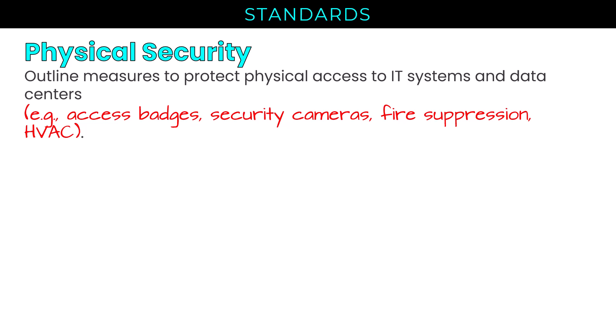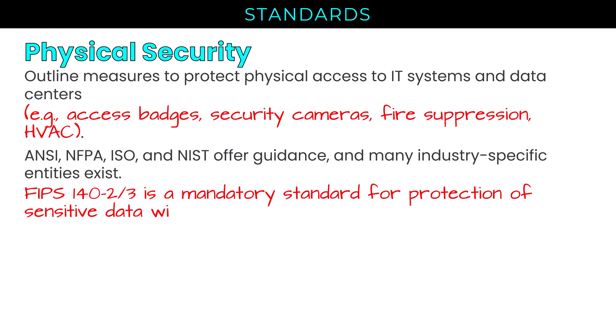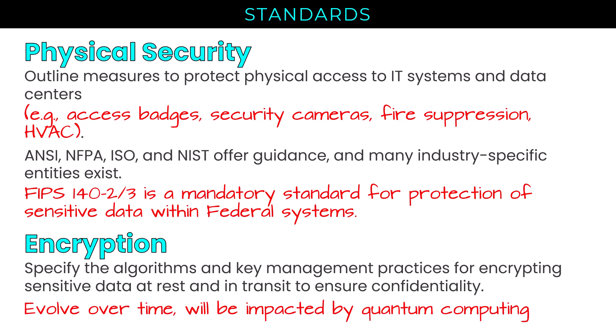There are a number of authoritative entities that offer guidance on physical security — ANSI, ISO, NIST, and NFPA, the National Fire Protection Association. For example, FIPS 140-2 or 140-3 is a mandatory standard for protection of sensitive data within federal systems, which at its highest level also includes requirements around physical security. Encryption standards specify the algorithms and key management practices for encrypting sensitive data at rest and in transit. These evolve over time and will be impacted by quantum computing, which is why NIST kicked off a competition to identify quantum-resistant algorithms, selecting a few to run through the certification process.